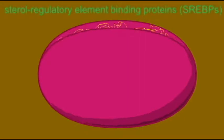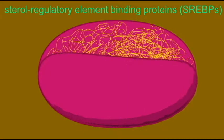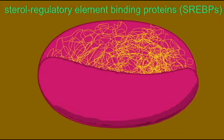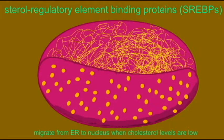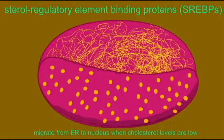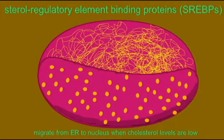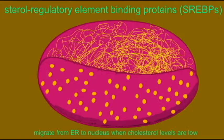How much cholesterol and fatty acid does our body make? This is regulated by a family of transcription factors known as the sterol regulatory element binding proteins or SREBPs. These proteins migrate from the endoplasmic reticulum to the nucleus when cholesterol levels are low. They bind to the regulatory elements in the genes responsible for cholesterol and fatty acid synthesis and control their levels of activity.